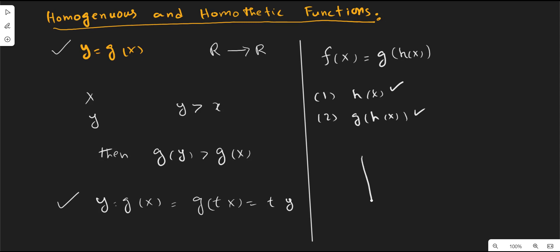The second important point is that the degree of monotonic transformation is not clear. For example, if y is a function of x, the monotonic transformation can assume many different functional forms. There can be so many functional forms, all showing a positive relationship between input and output, but the degree of monotonic transformation differs across these graphs. It is therefore very unclear to determine the degree of the monotonic transformation of a homogeneous of degree 1 function.